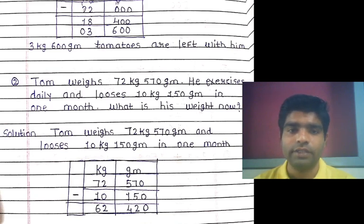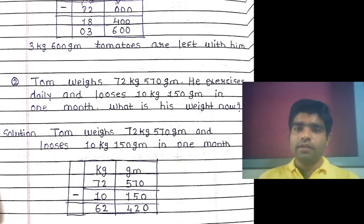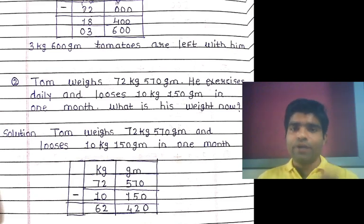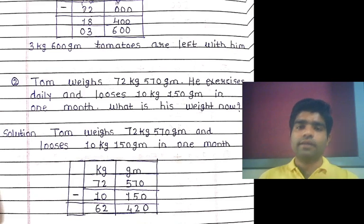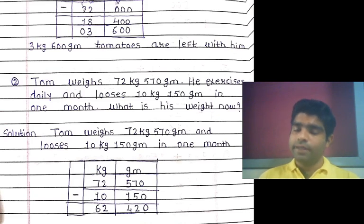In one month, that is the given condition. Tom's initial weight is 72 kg 570 grams and his loss of weight is 10 kg 150 grams. Since weight is being lost, we use subtraction. Tom's weight is 72 kg 570 grams and the loss is 10 kg 150 grams in one month, so we arrange in column form with kilogram and gram.